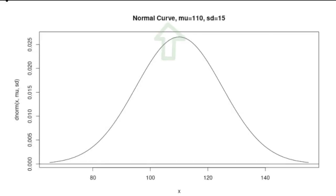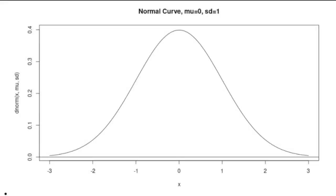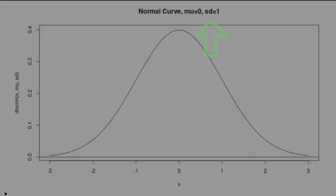For a normal distribution, you need to know the population mean and the population standard deviation. The standard normal curve is a particularly important normal curve — it has a mean of 0 and a standard deviation of 1.